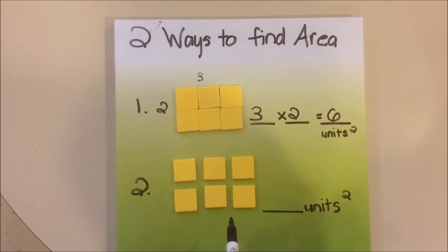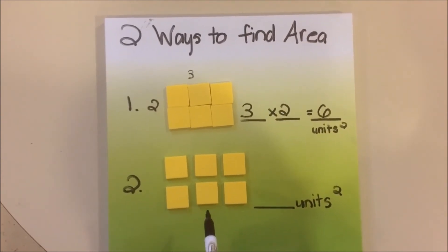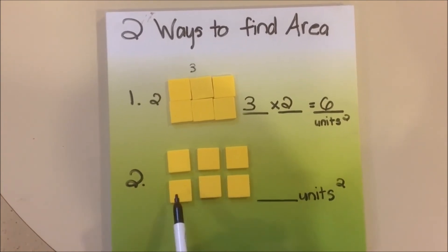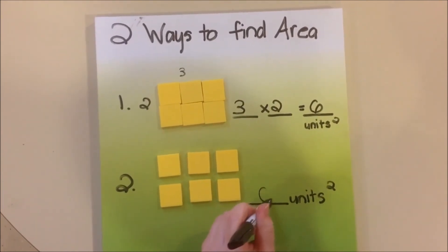The second way to find area of a rectangle is to count the unit squares. In this rectangle, we have 1, 2, 3, 4, 5, 6 units squared. And they have the same area.